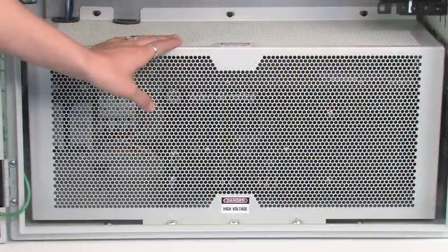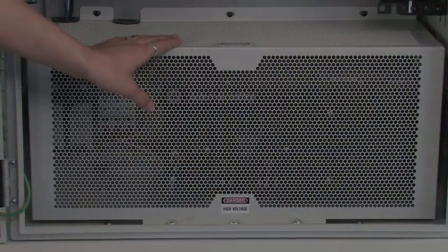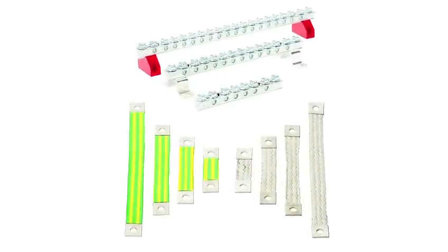Isolation barrier allows segregation of line voltage equipment and lower voltage switches. Grounding bus bar and braided grounding straps.